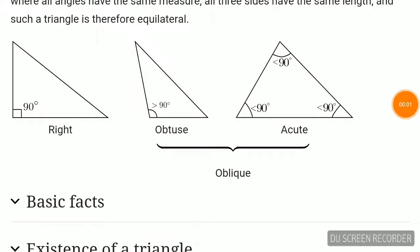To recapitulate what we have learned: a triangle is a geometrical figure made out of three vertices, three sides and three angles. Based on the sides, triangles are of three types: equilateral triangle, isosceles triangle and scalene triangle. Based on the angles, triangles are classified as right angle triangle, obtuse angle triangle and acute angle triangle. Thank you very much.